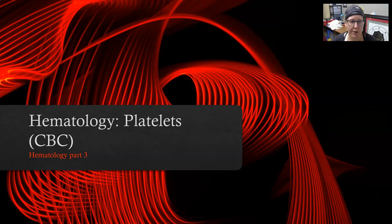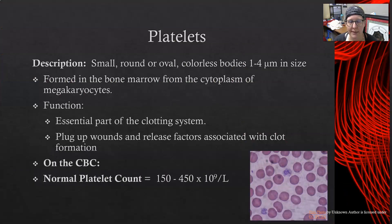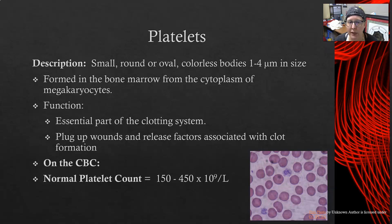Hi everybody, Dr. A with our next video in our basics of the lab series on hematology. We're going to look at platelets as part of a CBC. Platelets are small round to oval colorless bodies, 2-4 microns in size. They are formed in the bone marrow from the cytoplasm of a megakaryocyte. The megakaryocytes are big, they stay in the bone marrow, and then their cytoplasm pinches off — those pieces of cytoplasm are what enter the bloodstream as platelets.